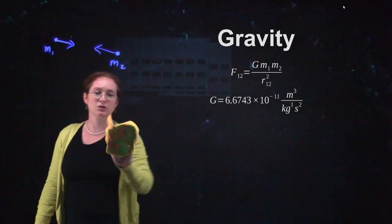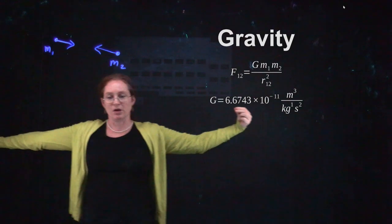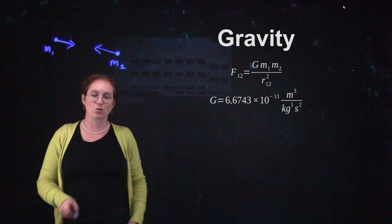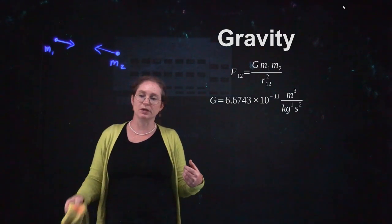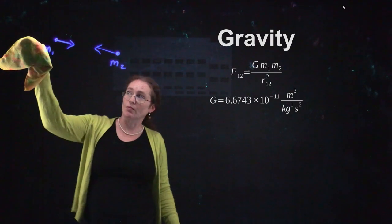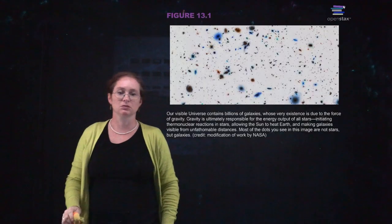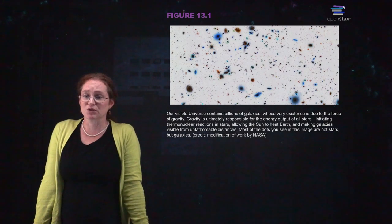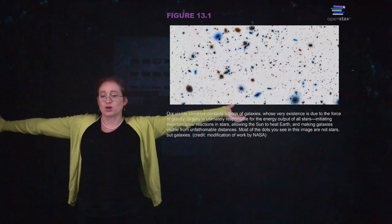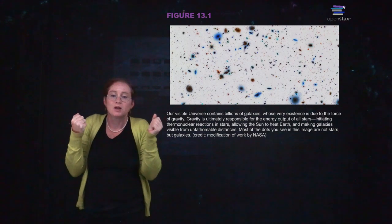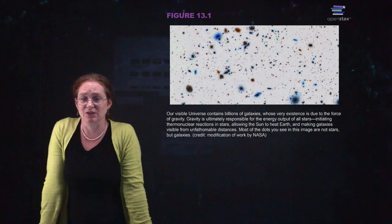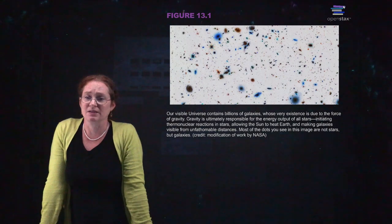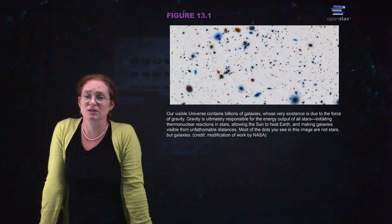The closer two objects are, the greater the gravitational force between them, and the magnitude of the force falls off as the distance squared. This is what describes the attraction between the planets and the sun. Our universe has billions of galaxies, all attracted to each other gravitationally. Gravity is ultimately responsible for the output of all stars — because stars are so massive they're being pulled inward, which can start thermonuclear reactions, allowing the sun to heat the Earth. We wouldn't be here without gravity.